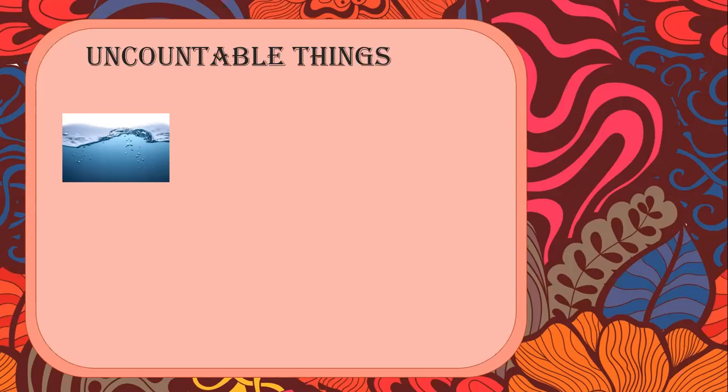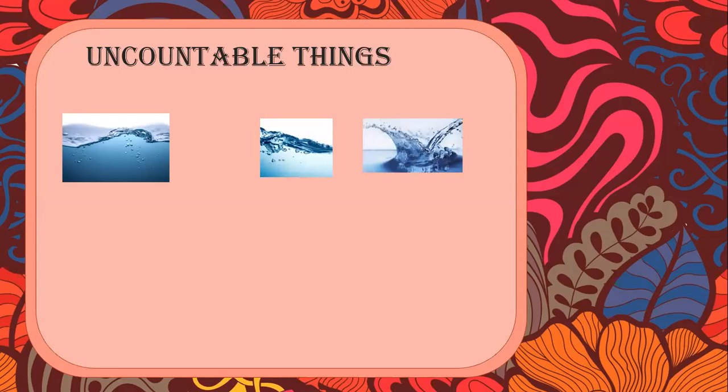Now here are uncountable nouns — things that cannot be counted on their own. What we just saw were countable nouns, things that can be counted without extra help. But uncountable things need help. For example, water: can you say one water, two water, three waters? No, you really can't. There's just 'water,' a little water, or a lot of water, but not one, two, or three waters.